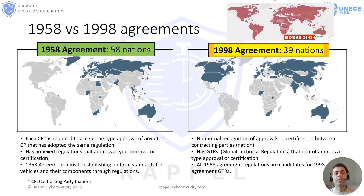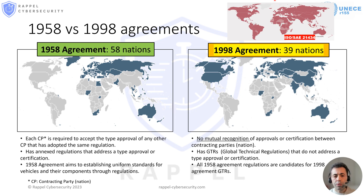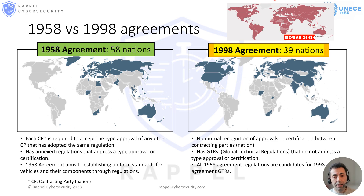So what made this possible? What are the most important differences between the 1958 and 1998 agreements? First of all, unlike the 1958 agreement, the 1998 agreement does not call for mutual recognition of approvals or certification. The mutual recognition in the 1958 agreement says that all contracting parties who have signed the same regulation will recognize each other's approvals. This significantly reduces time and costs of design, manufacture, approval, and entry into service. On the other hand, it reduces flexibility and introduces a dependency which is not tolerated by all nations. The UN GTRs are technical regulations established under the 1998 agreement and will not refer to a type approval or certification procedure.